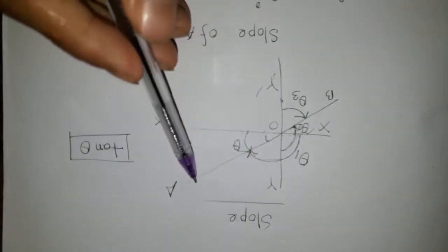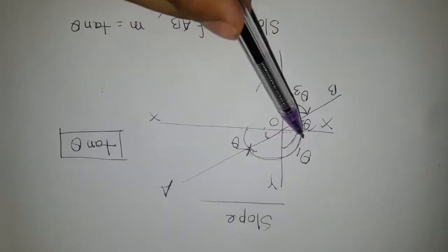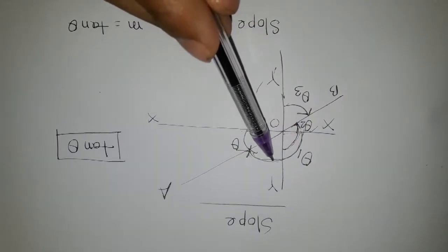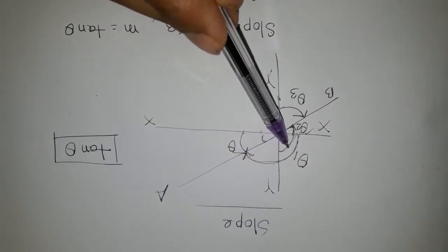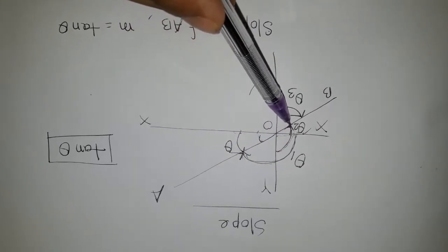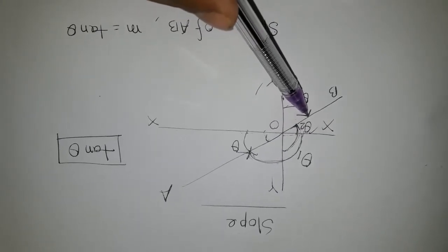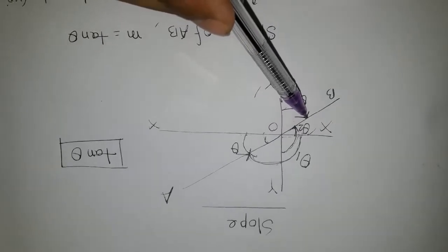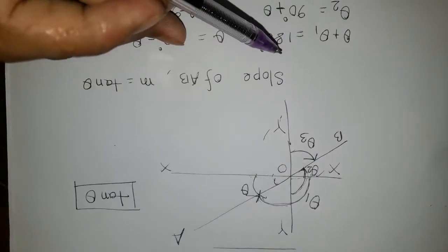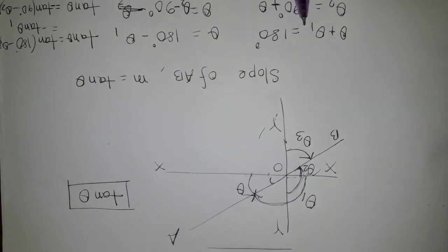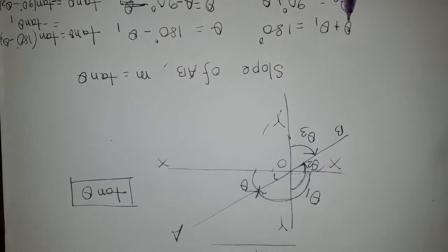Now if we take a closer look, you can see that AB makes angle theta with the positive direction of the x-axis, makes angle theta 1 with the negative direction of the x-axis, makes theta 2 with the positive direction of the y-axis, and makes theta 3 with the negative direction of the y-axis. So if I calculate, we can find theta plus theta 1.